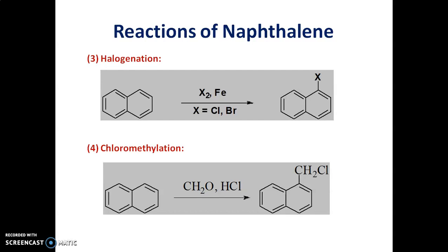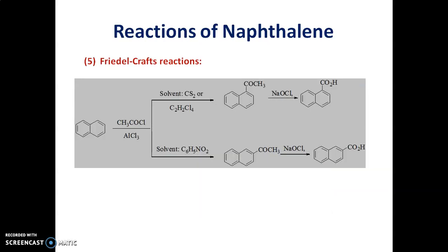We have halogenation reaction. Naphthalene reacts with different halogens such as chlorine or bromine to give 1-chloro or 1-bromonaphthalene. Chloromethylation of naphthalene, that is reaction of naphthalene with formaldehyde and HCl in presence of zinc chloride gives 1-chloromethyl naphthalene.